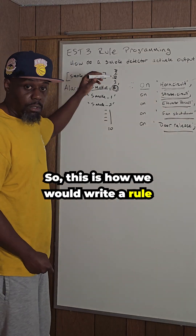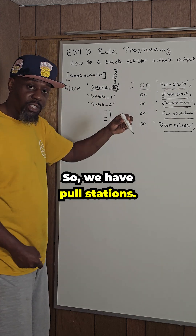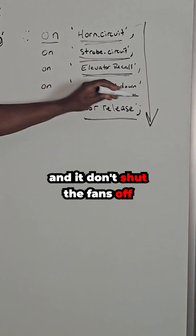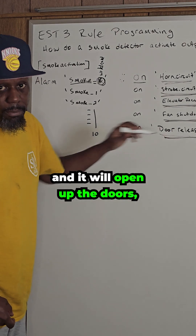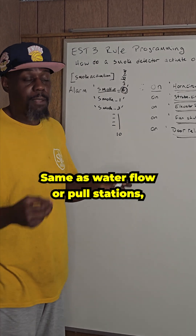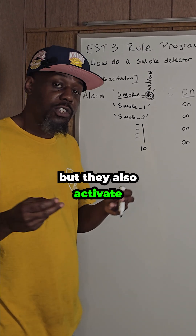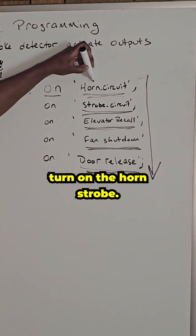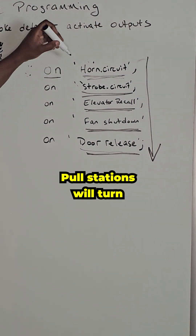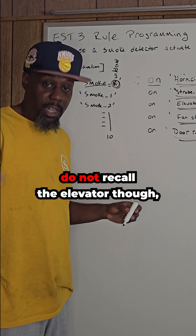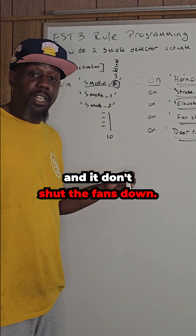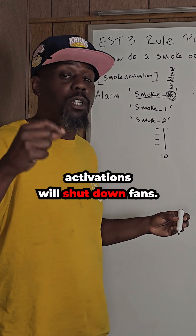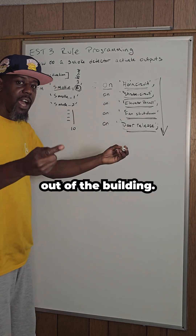This is how we write rules for all input devices. Pull stations have different functions — they don't recall the elevator and they don't shut the fans down, but they will turn on the horns, turn on the strobes, and open the doors. Pull stations do not recall the elevator because it's a manual activation. Only automatic activations will shut down fans, but pull stations will open the doors so you can get out of the building.